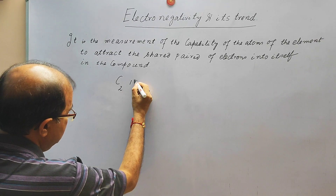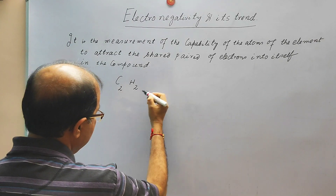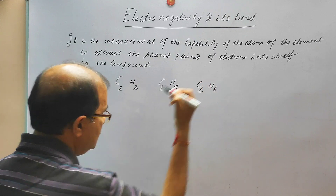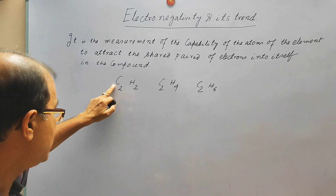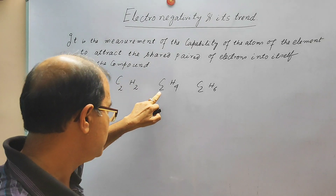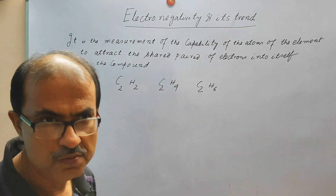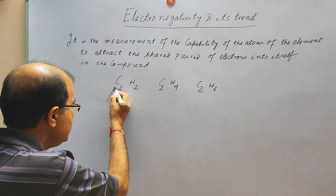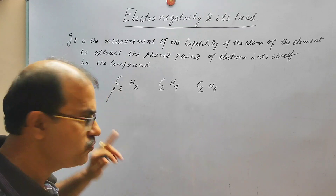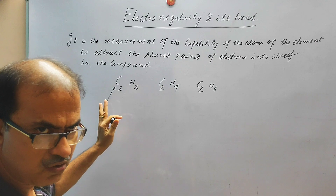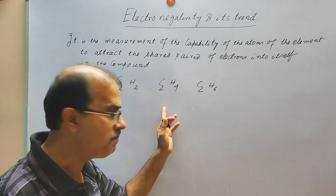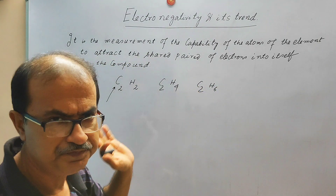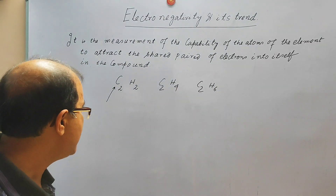Now suppose you have three hydrocarbons: acetylene C2H2, C2H4, and C2H6. What do you expect — that the electronegativity of carbon in C2H2 and in the other compounds will be the same? It will not be the same. The electronegativity of carbon in C2H2 is the highest among these three compounds, followed by C2H4, and in C2H6 the electronegativity is lowest among these three.